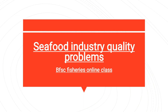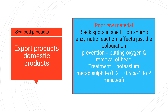Welcome to BFSC Fisheries online class. Today we will talk about quality problems in the seafood industry. Seafood can be of domestic nature or export products, and due to poor processing and selling practices we face many difficulties. Quality can be poor due to these activities, so attention is needed in primary processing and after processing as well.